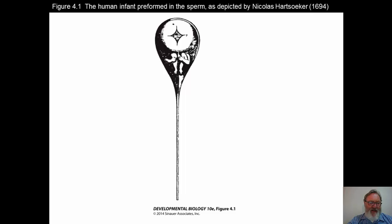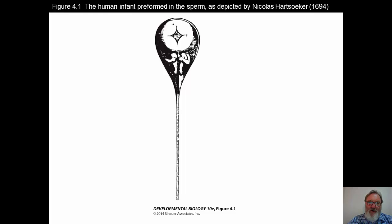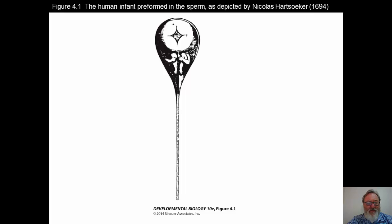It wasn't until 1876 that Oscar Hertwig and Herman Foll independently discovered that there was actually a fusion of the sperm and the egg, and the sperm and egg nuclei, using the sea urchin model. Fertilization takes place outside of the body in sea urchins, and through microscopy and microscopic observation, they were able to prove that a fusion takes place and that a new animal is formed in this way.